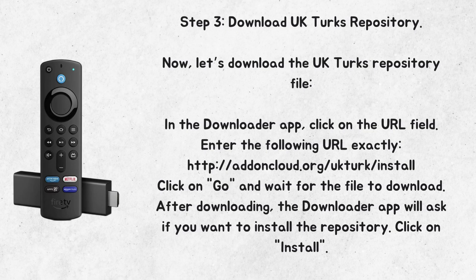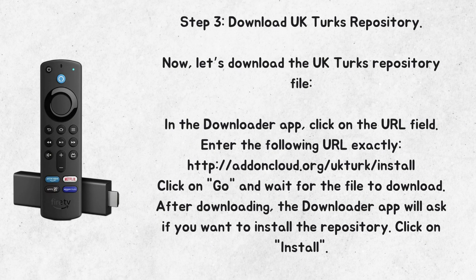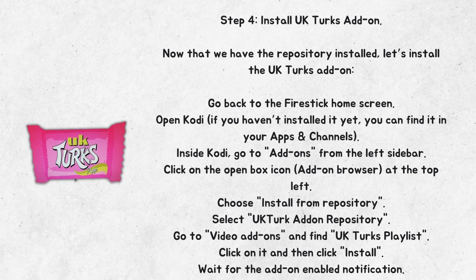Step 3: Download the UK Turks repository. Now let's download the UK Turks repository file. In the Downloader app, click on the URL field and enter the following URL exactly: addandcloud.org. Click on Go and wait for the file to download. After downloading, the Downloader app will ask if you want to install the repository. Click on Install.